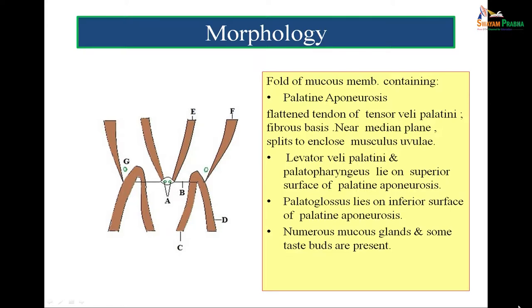The tensor veli palatii muscle F forms the palatine aponeurosis B. It splits in the center to enclose the musculus uvulae muscle, marked A. On the upper surface of the palatine aponeurosis you see muscle E, the levator veli palatii, and muscle D, the palatopharyngeus, both attached on the upper surface. Muscle C, on the lower surface, is the palatoglossus muscle. G represents the pterygoid hamulus. If one understands this diagram, one can understand the morphology, the action, and the formation of the soft palate — I refer to it as the key diagram.